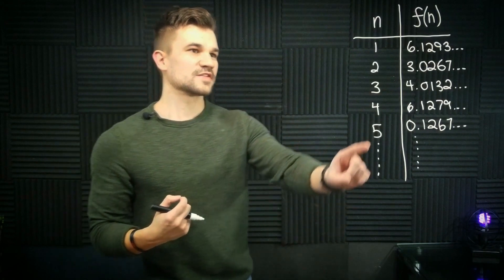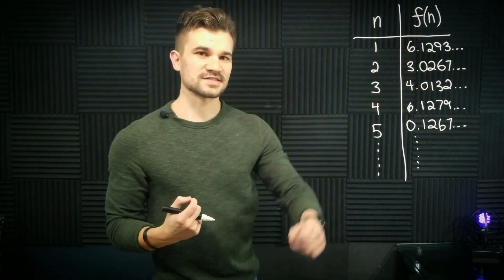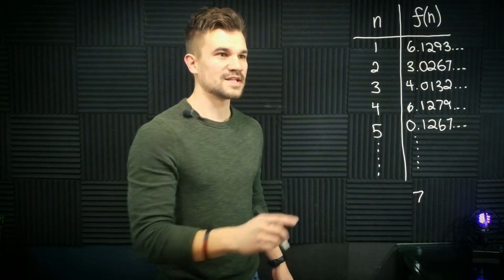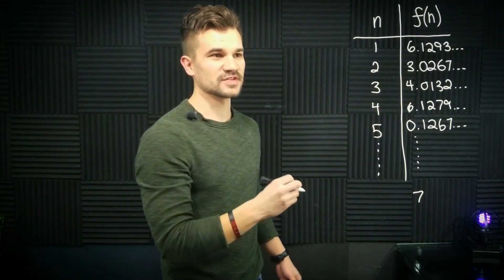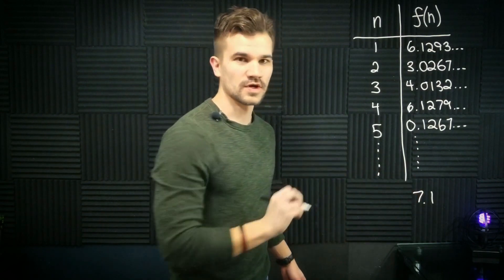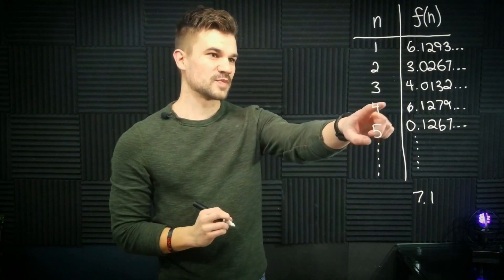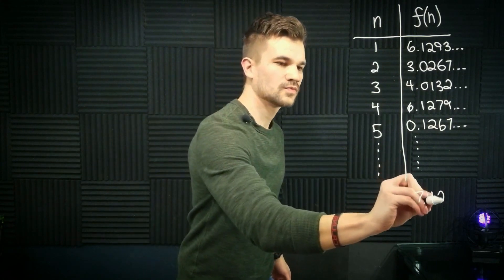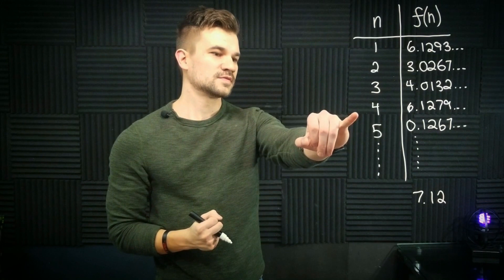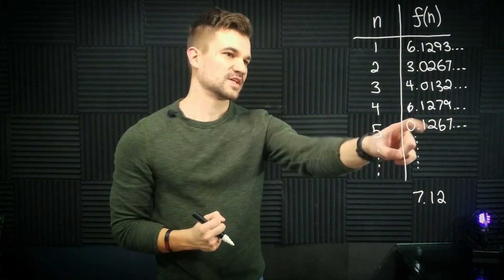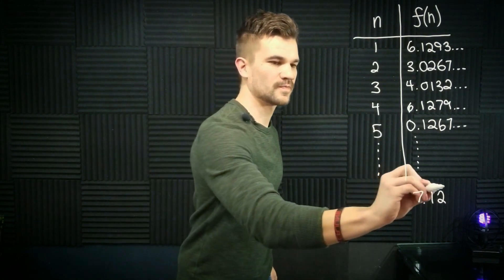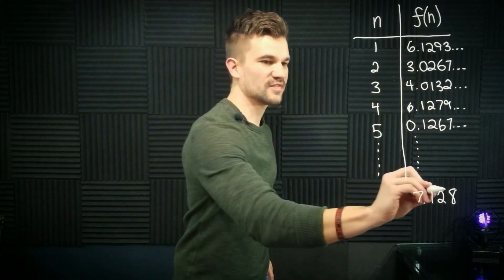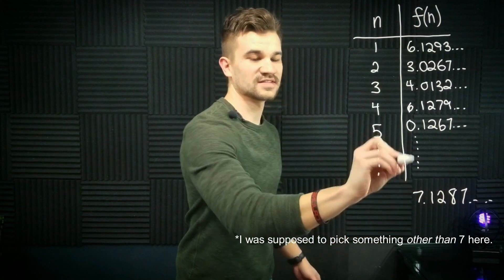So what we do is we look at the first spot of the first number. It's a 6. So pick something different. 7. Now we look at the second spot of the second number. It's a 0. Pick something different. 1. Now we look at the third spot of the third number. It's a 1. Pick 2. Look at the fourth spot of the fourth number. We get a 7. So let's pick 8. And we look at the fifth spot of the fifth number and we get a 7. And we let this process continue throughout.